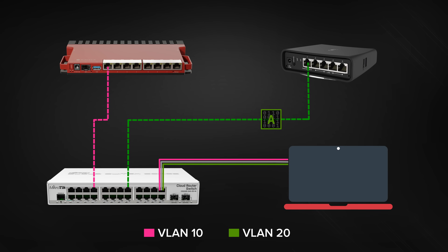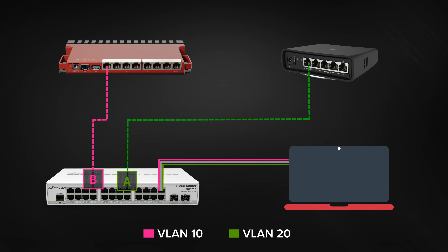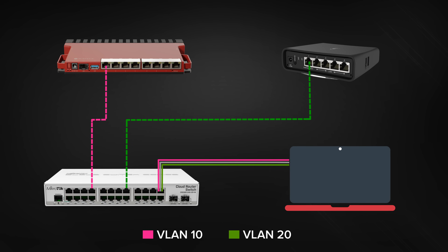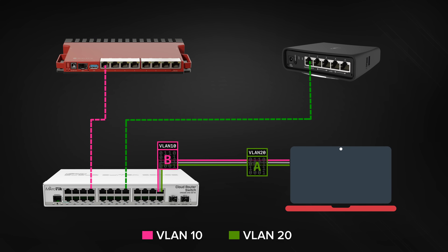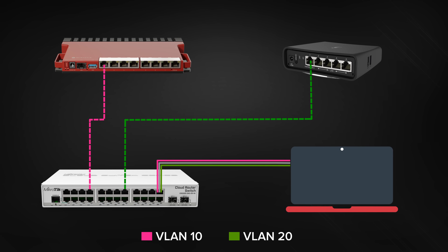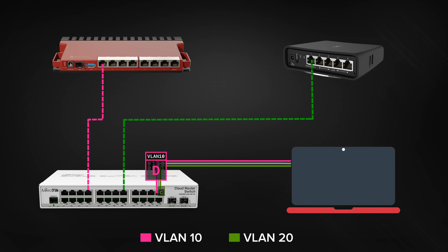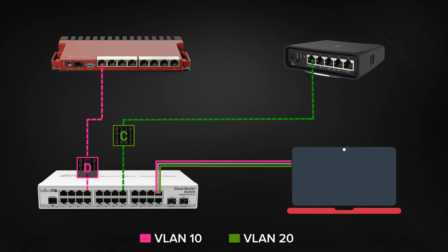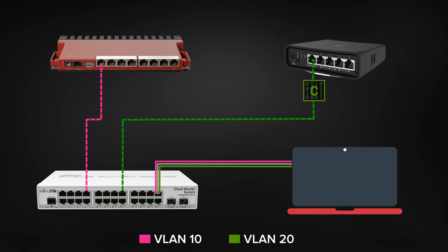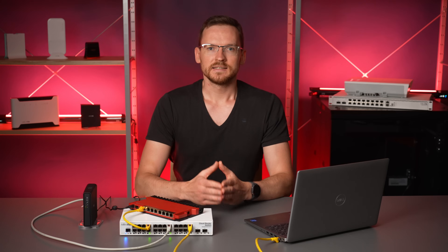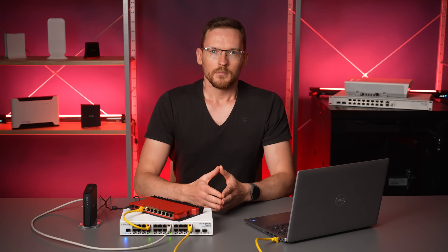Now, any frames that we send to these will have VLAN tags inserted into their frame structure, and the altered frames will exit the ether24 interface. Similarly, VLAN tagged traffic coming into the ether24 interface will have their tags removed, and the frames will be sent out the appropriate VLAN interfaces untagged.